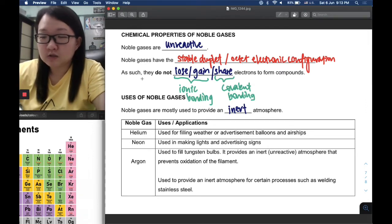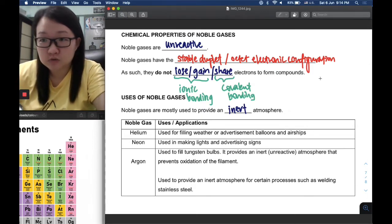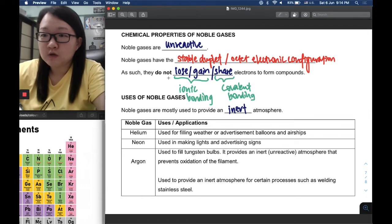As a result, noble gases do not lose, gain, or share electrons to form compounds. This is important because it links to chemical bonding. If atoms lose or gain electrons, ionic bonding is involved and ionic compounds are formed. When atoms share electrons to form stable duplet or octet electronic configuration, covalent bonding is involved, forming covalent compounds.